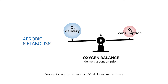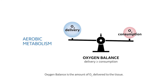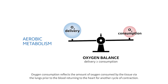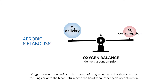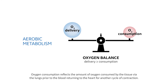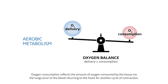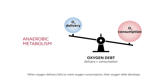Oxygen balance is the amount of O2 delivered to the tissue. Oxygen consumption reflects the amount of oxygen consumed by the tissue via the lungs prior to the blood returning to the heart for another cycle of contraction. When oxygen delivery fails to meet oxygen consumption, then oxygen debt develops.